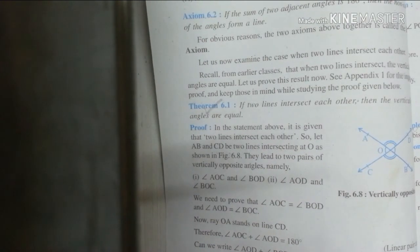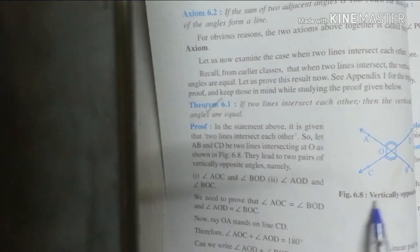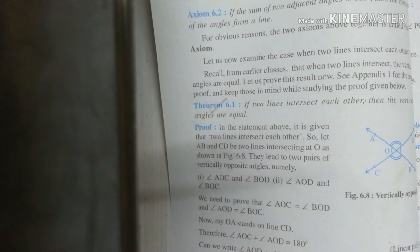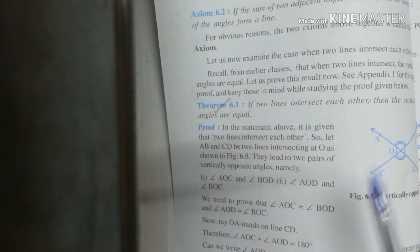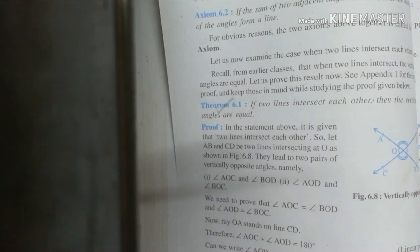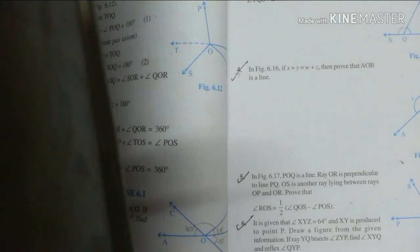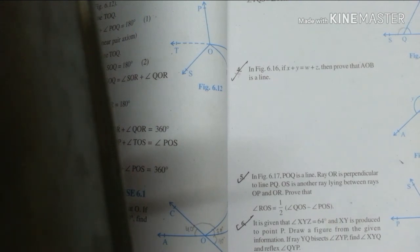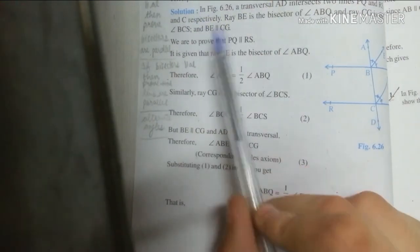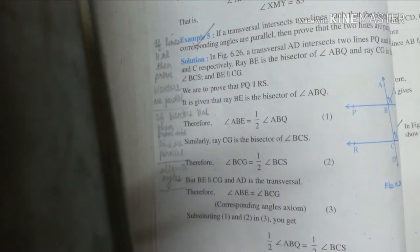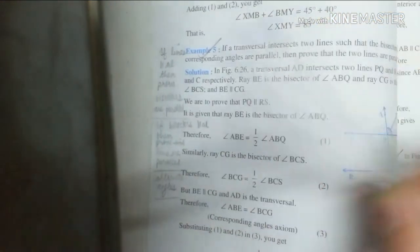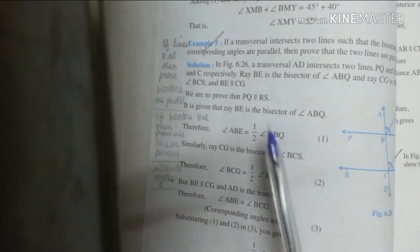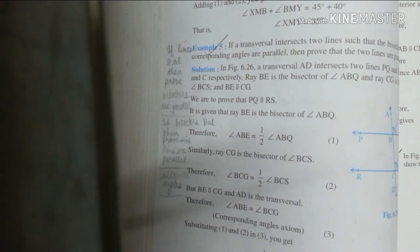From the Lines and Angles chapter, you should be clear on two theorems: vertically opposite angles and angle sum property. Vertically opposite angles will especially come in the exam. The 5th question from this chapter is a bit tricky but simple at the same time — it can come for three marks maximum. The main important question from this chapter is example number 5. Make sure you do it really well, as it can come in various forms — I can assure you it will likely be in your SA exams.